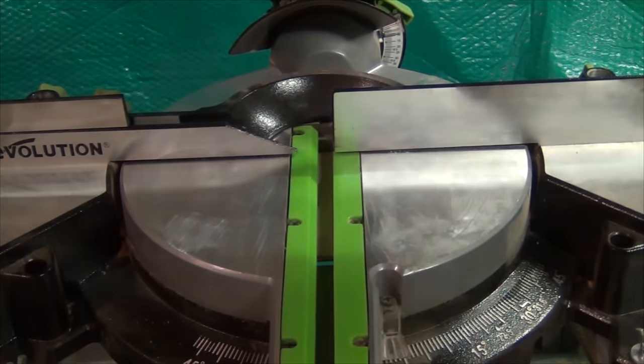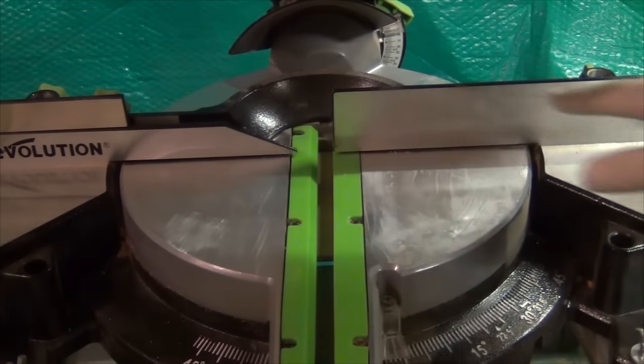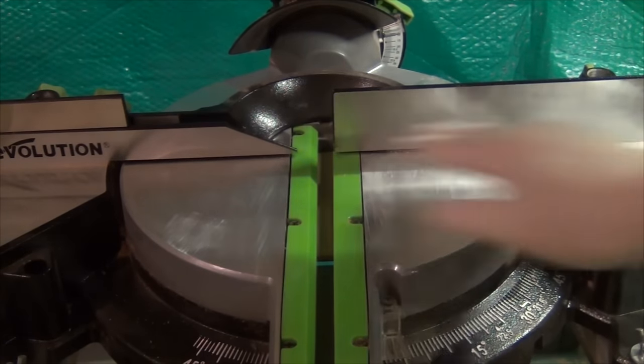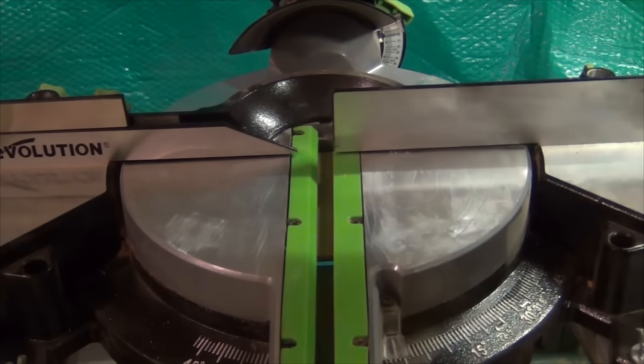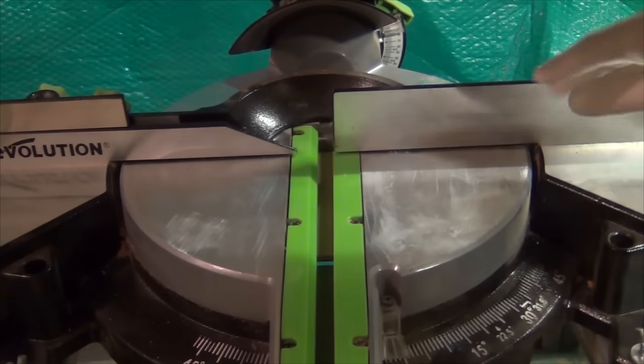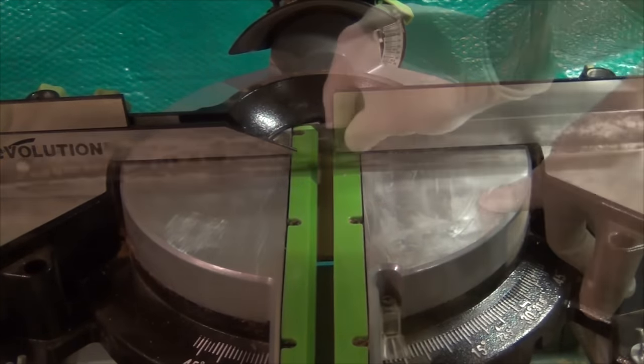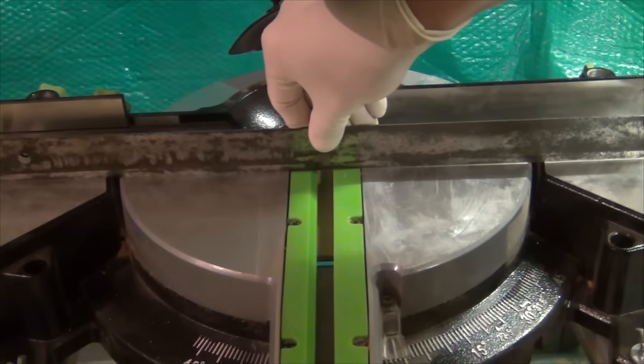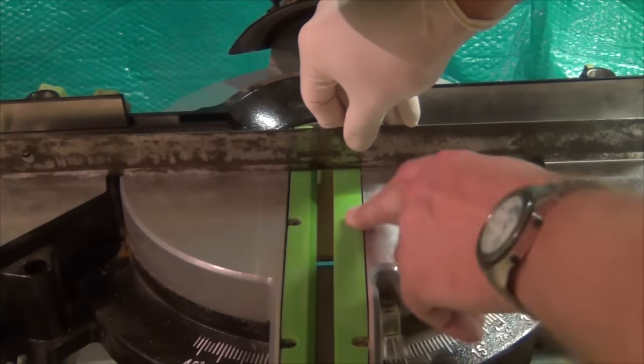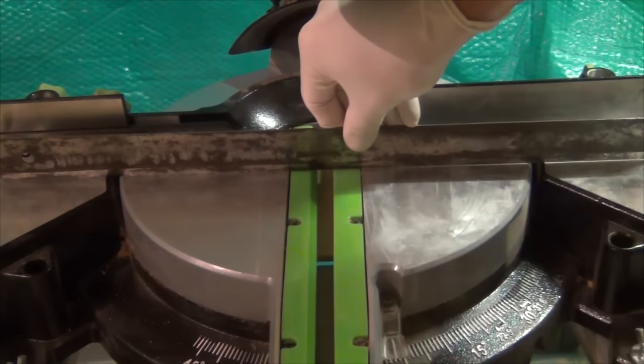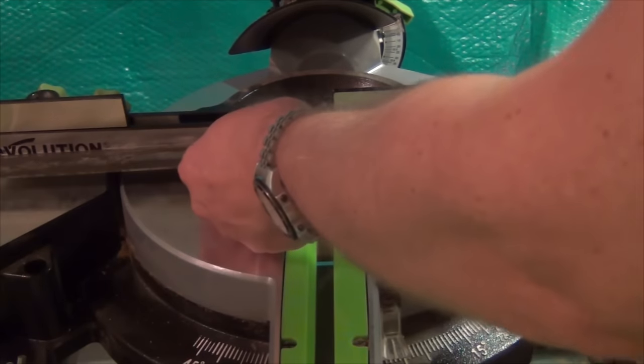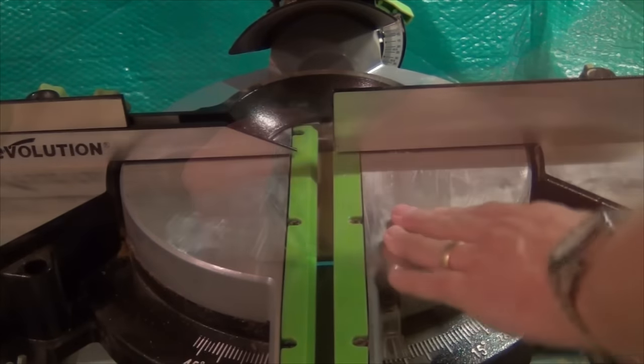The important thing with a saw like this is that the base the work is going to sit on—the rotating table and these two outer wings—are nice and flat, and also that the fence is straight and flat and at 90 degrees to the table. Immediately I can see that the table in the center is very slightly higher, and it's not this insert, it is actually the aluminum table.